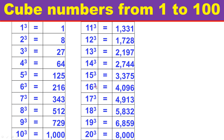16 cube equals 4096. 17 cube equals 4913. 18 cube equals 5832. 19 cube equals 6859. 20 cube equals 8000.